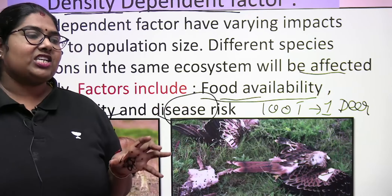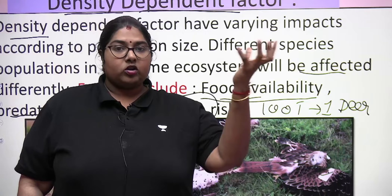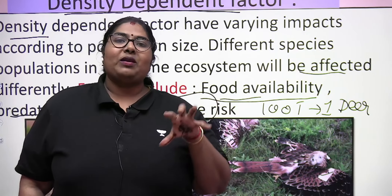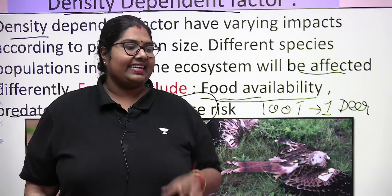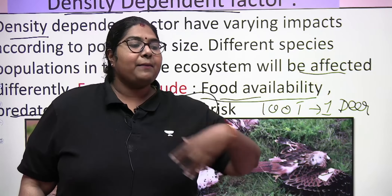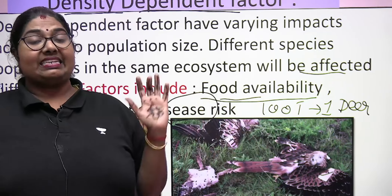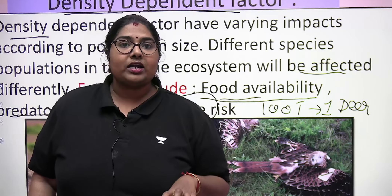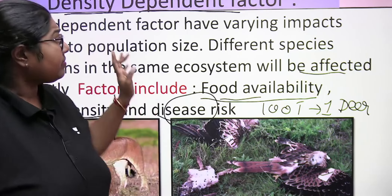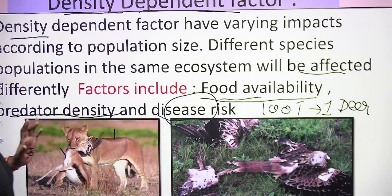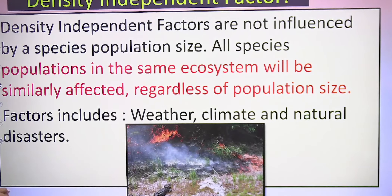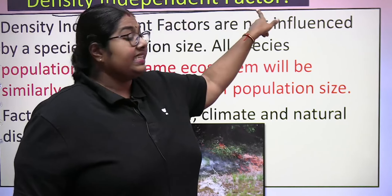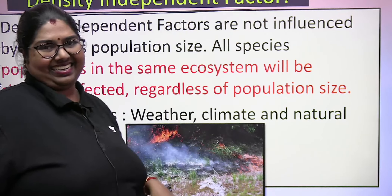To recap: the population increases due to birth and immigration, and decreases due to death and emigration. The intrinsic growth rate r equals b minus d. We have now covered the density-dependent factor.